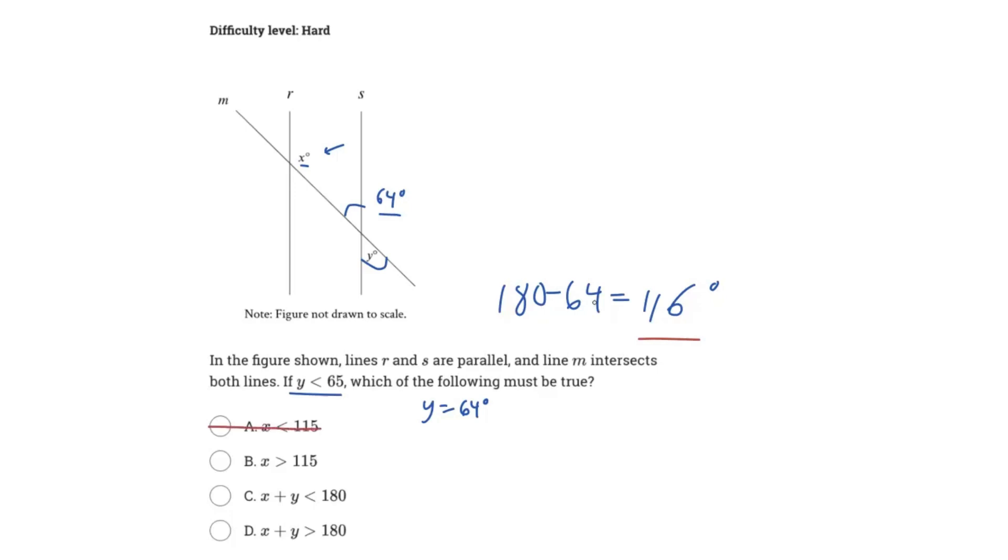If we were to lower this angle, which we would have to, I mean, if we had like 64.99, we would end up getting like 115.0001, right? But let's see if B is true. So it says B says X has to be greater than 115. Is that true?